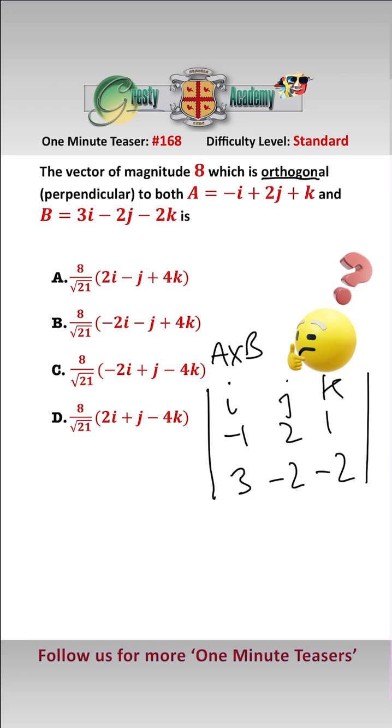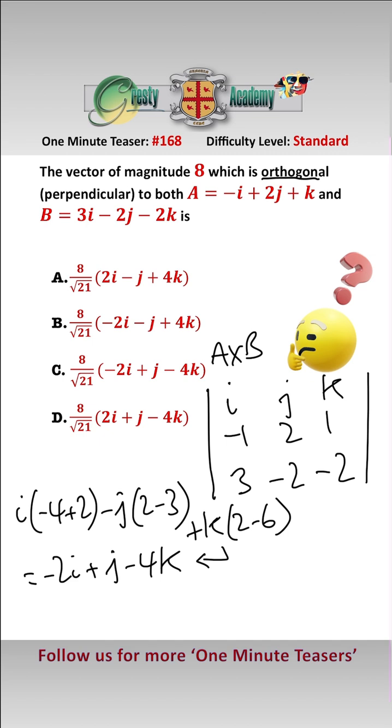And expanding that gives us i times (minus four plus two) minus j times (two minus three) add k times (two minus six), which equals minus two i add j minus four k. So that is the right directional vector.